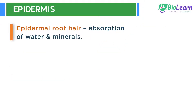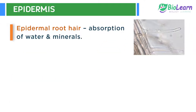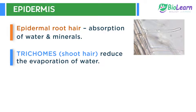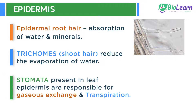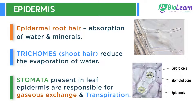Epidermal root hair help in the absorption of water and minerals from the soil. Trichomes or shoot hair are also epidermal in origin. They reduce the evaporation of water and protect the plants. Stomata are tiny pores present in the epidermis of the leaves, which are responsible for exchange of gases and transpiration.